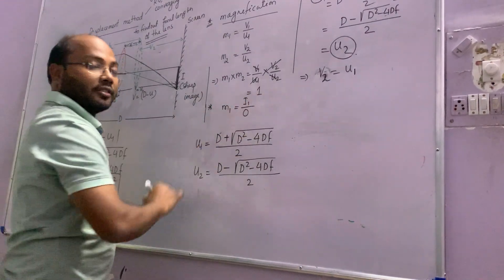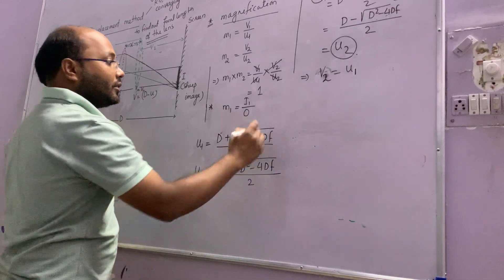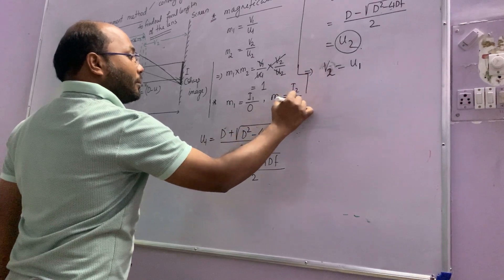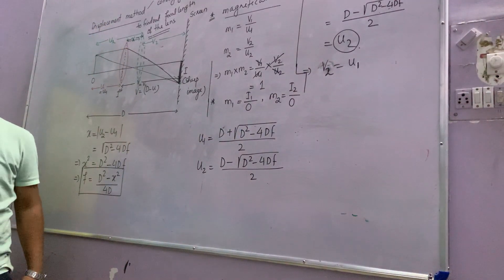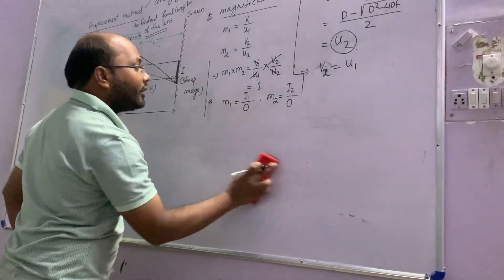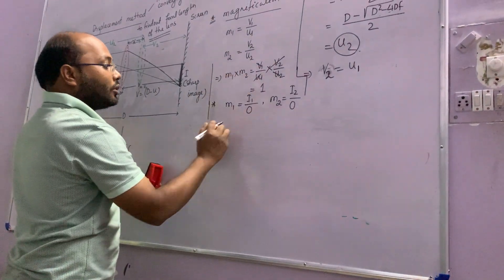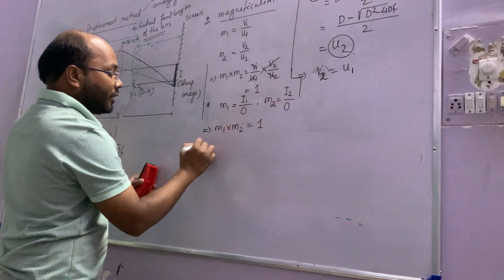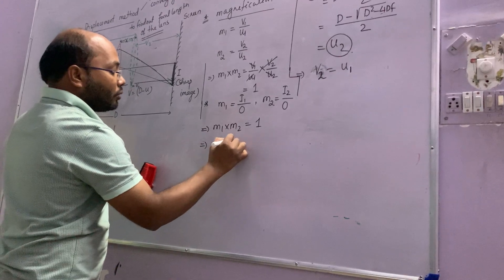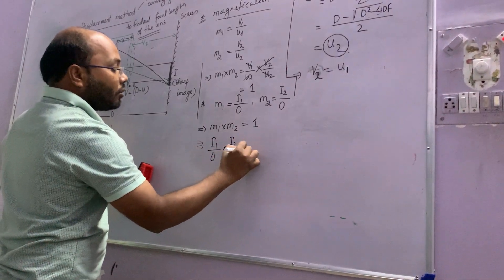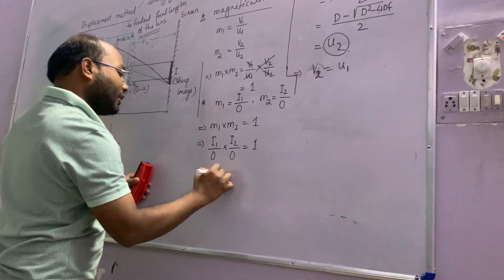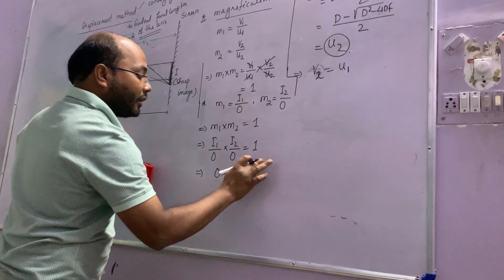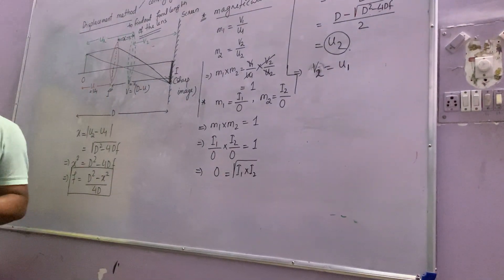Magnification is image height divided by object height. From M₁ × M₂ = 1, we get (I₁/O) × (I₂/O) = 1, so O² = I₁ × I₂. Therefore the object height equals the square root of I₁ times I₂. This is a very common question in objective problems.